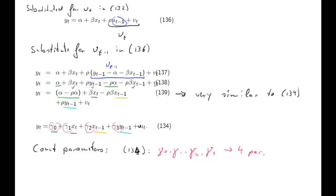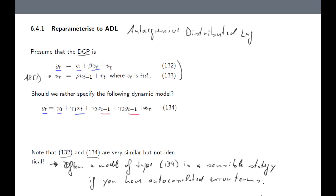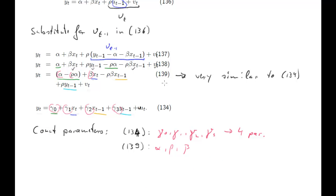What about equation 139? Here we have alpha — appearing in two places — rho, and beta. All the remaining parameters are combinations of rho, alpha, and beta. So we only have three parameters: alpha, rho, and beta. We can recognize these three parameters from our models 132 and 133, because those were the three parameters we had there. Since we only manipulated 132 and 133 to get to 139, we haven't introduced any new parameters. So while these two models have exactly the same terms, they are not the same: equation 139 only has three parameters.